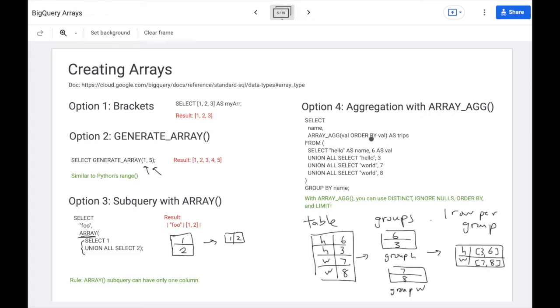So you may be familiar with other aggregation functions like sum and count where you group by. An array ag doesn't work any differently. So let's say we have this table from the example with hello6, hello3, world7, world8. We split this by groups by name. So then h is one possible name, w is another. We have the values. And rather than summing or counting, we just group them together in an array with array ag.